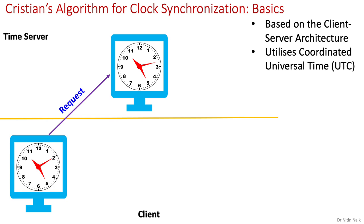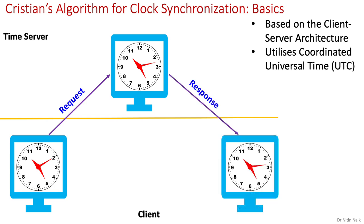When a client wants to adjust its clock according to the reference time, it sends a request to the time server. The time server executes that request and sends its reply with the current reference time to the client. The communication between the client and server is based on the remote procedure call or RPC.